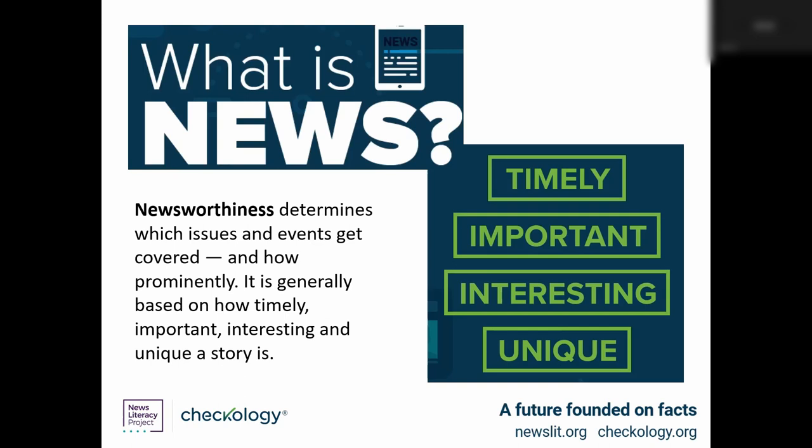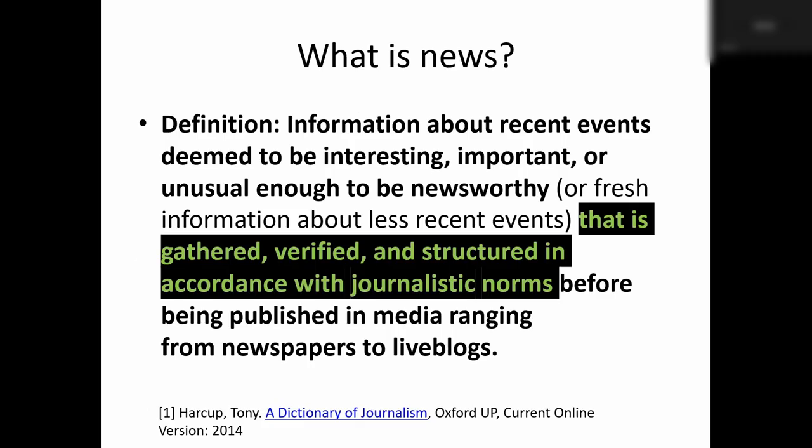What is news? Here is a list of general criteria for newsworthiness, but these criteria do not talk about the processes that lead to credible news reporting. This definition starts out with a similar description of news. I want you to notice that this definition is very explicit about the process used to create news reports. Credible news reporting is gathered, verified, and structured in accordance with journalistic norms before being published in media, ranging from newspapers to live blogs. The word 'verified' is very important here.